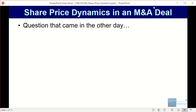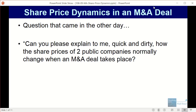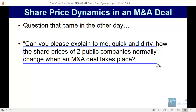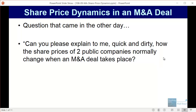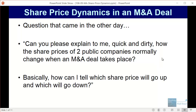Here's the question that came in the other day: Can you please explain quick and dirty how the share prices of two public companies normally change when an M&A deal takes place? Basically, how can I tell which share price will go up and which one will go down when one public company makes an offer to acquire another?